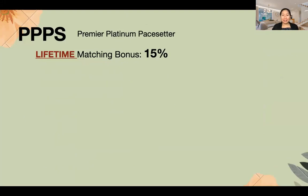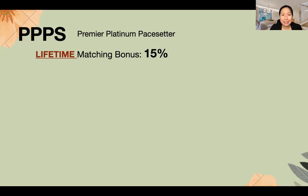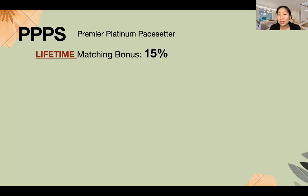Now, PPPS — Premier Platinum Phase Center — this is the status with a deadline. It's a status with criteria, requirements, and qualifications. If you become a PPPS, the next thing you do is help the people in your team become PPPS too. If you and your friend are both PPPS, you'll receive a 15% lifetime matching bonus from their income. So if they earn $100 this week, you get $15. If they earn $1,000, you get $150.